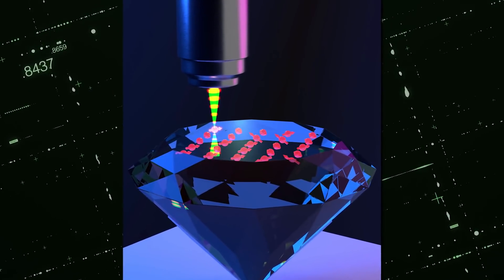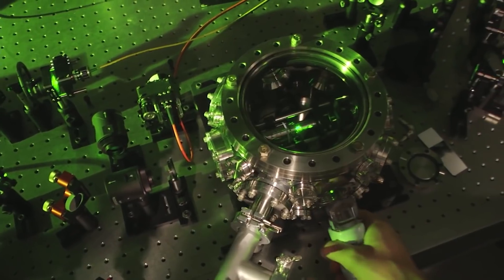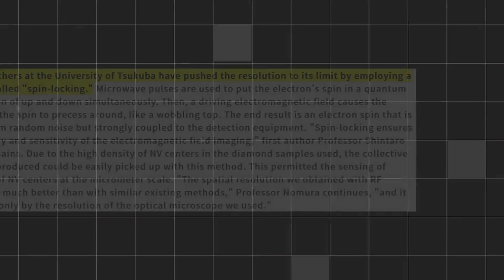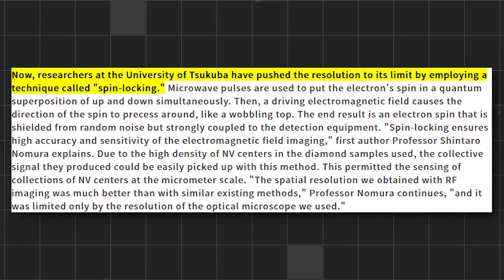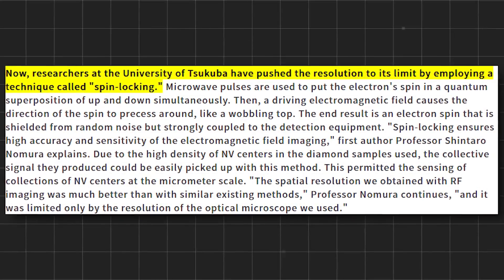Before this experiment, there was no clear way of altering the spatial resolution of radiowave detection through conventional radiofrequency techniques. But now, researchers from the University of Tsukuba have increased the resolution to maximum by employing a special technique known as spin-locking.